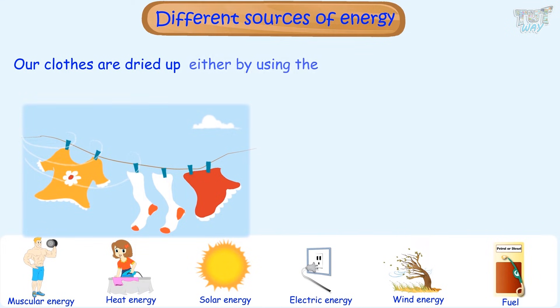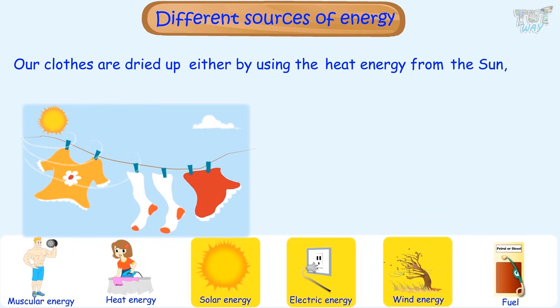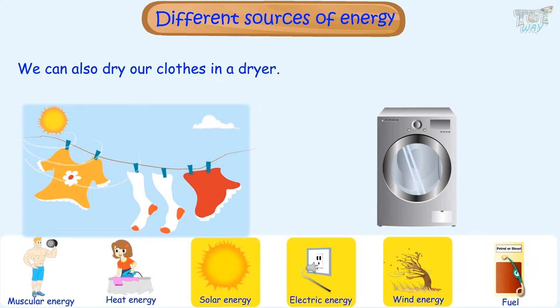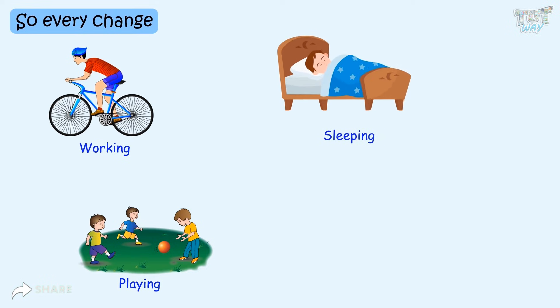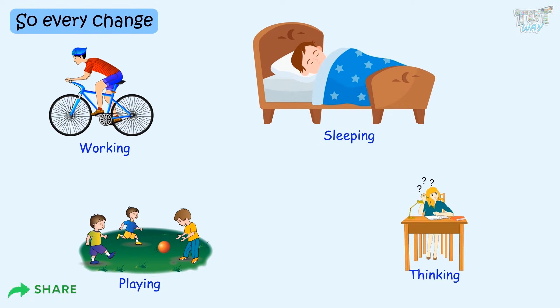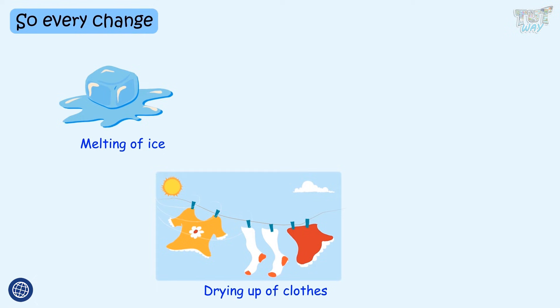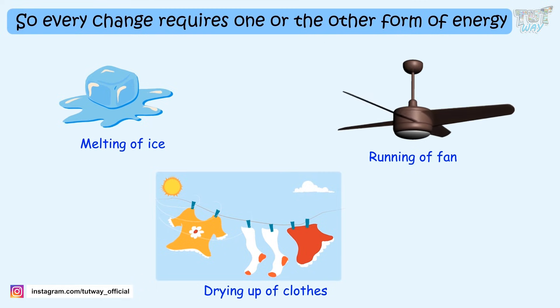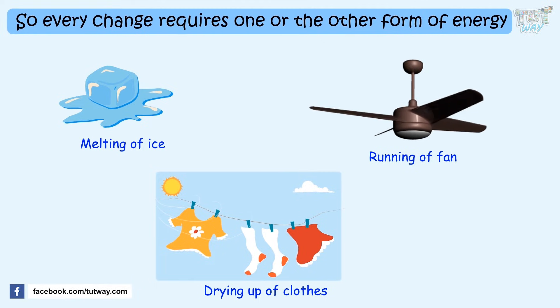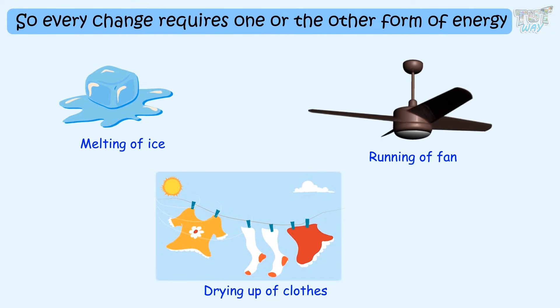Our clothes are dried up either using heat energy from the sun or wind, or we dry them in machines using electrical energy. So every change — from doing work, playing, sleeping, and thinking, to physical changes like melting of ice, drying up clothes, or running a fan — all requires one or the other form of energy.